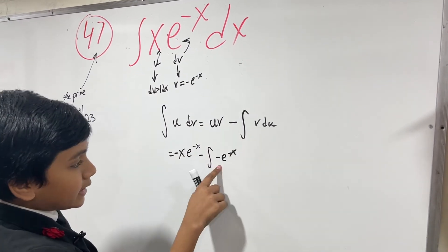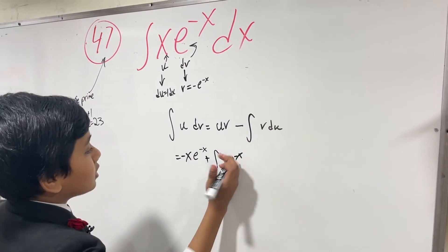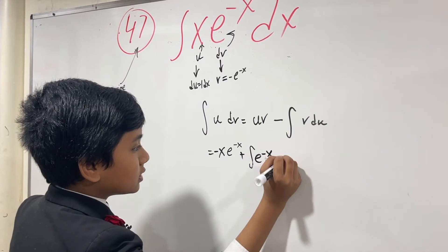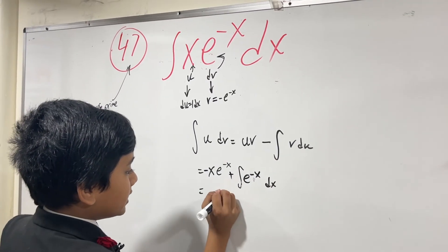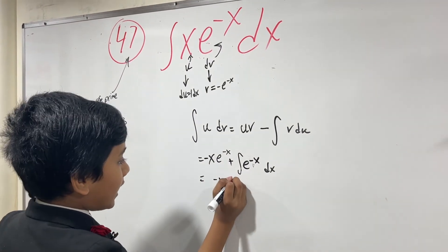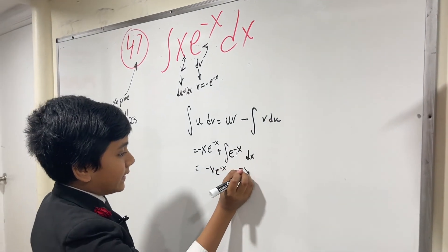We can take that minus sign out, making this a plus. So we get -x*e^(-x) plus the integral of e^(-x) dx. The integral of e^(-x) is -e^(-x), so we get -x*e^(-x) - e^(-x).